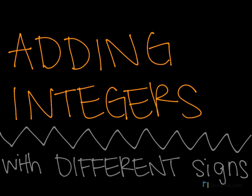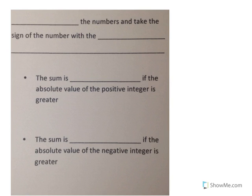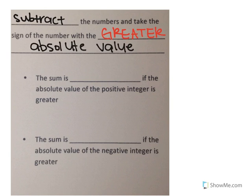Adding integers with different signs. Please make sure that you write everything in your notes that is in this video because it is all important and good to know. To add numbers or integers with different signs, you're actually going to subtract the integers — subtract the numbers and take the sign of the number with the greater absolute value. This means that the sum is positive if the absolute value of the positive integer is greater. Let's look at some examples.